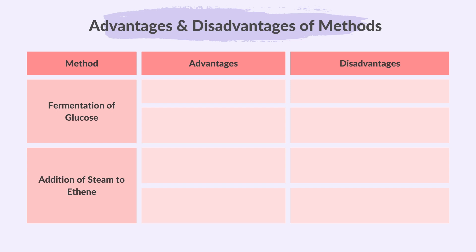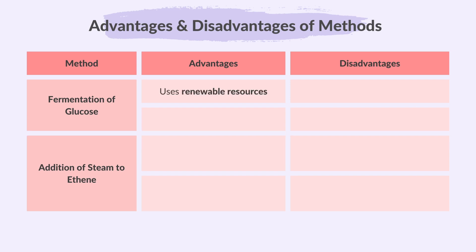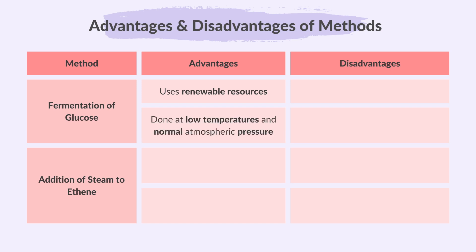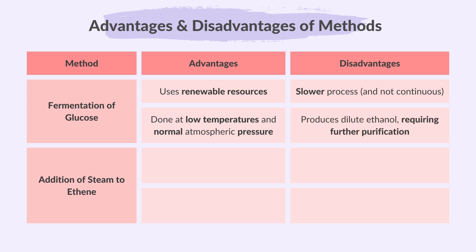So what are the advantages and disadvantages of the manufacture of ethanol by these two methods? For fermentation of glucose, the advantages are: it uses readily available renewable resources, can be done at low temperatures of 25 to 35 degrees Celsius, and normal atmospheric pressure, so it is not expensive. The disadvantages are: it is a slower process and not continuous — it requires a new batch when the yeast dies — and it produces dilute ethanol which needs further purification.